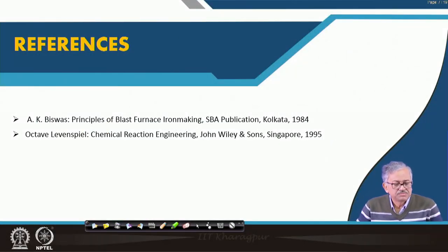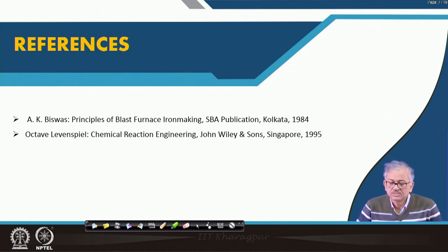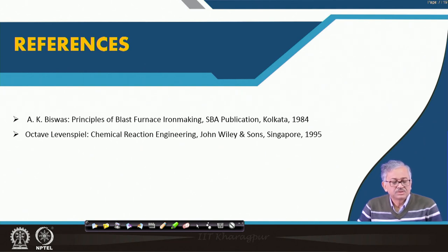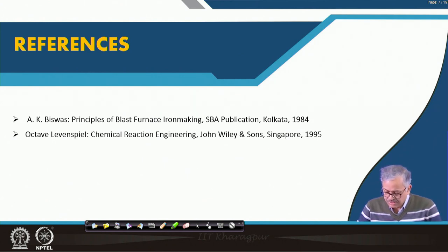The major references for this lecture are: Octave Levenspiel, Chemical Reaction Engineering, John Wiley, Singapore, 1995 — a very good book on the shrinking core model — and A.K. Biswas, Principles of Blast Furnace Ironmaking, which nicely depicts the layer-wise oxide reduction.